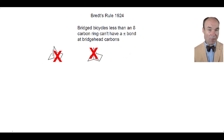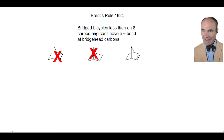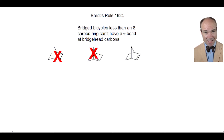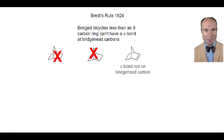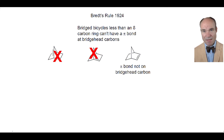How about this molecule? Well, there is a pi bond in the system. The rings are less than eight carbons in size. But critically, the pi bond's carbons are not bridgehead carbons. So this molecule is possible.